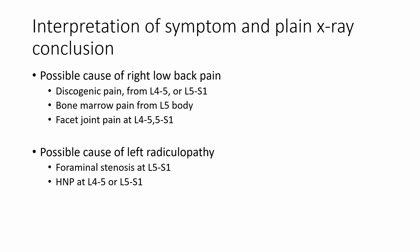Potential causes of right lower back pain are discogenic pain originating from L4-5 or L5-S1, bone marrow pain from the L5 body, and facet joint pain at L4-5 and L5-S1. For the left radiculopathy, possible causes include foraminal stenosis at L5-S1 and a herniated nucleus pulposus (HNP) at L4-5 or L5-S1.